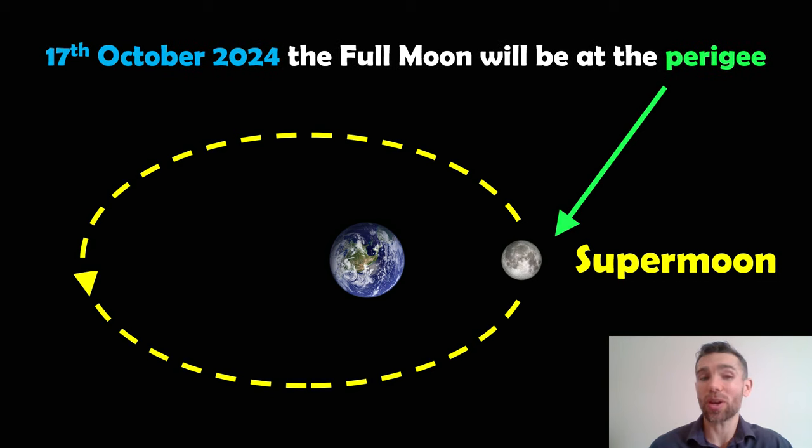We also get one on the next full Moon as well. So, the 17th of October, 2024, we're going to get the same. So, we'll get two supermoons in a row, which will be quite exciting, really.